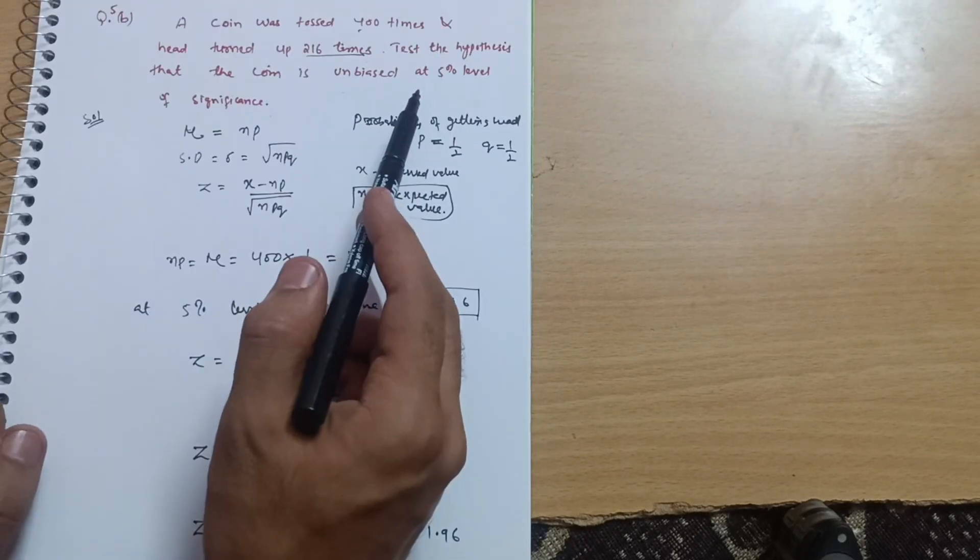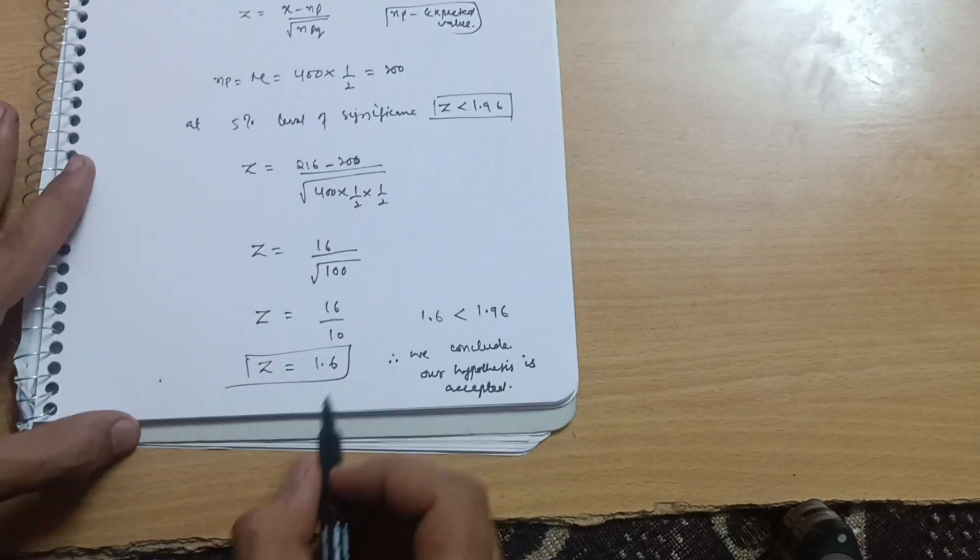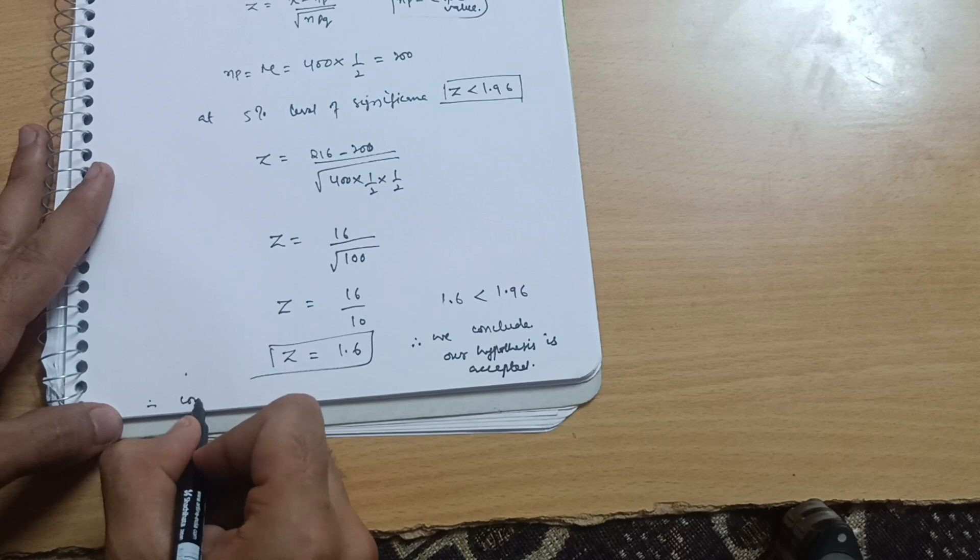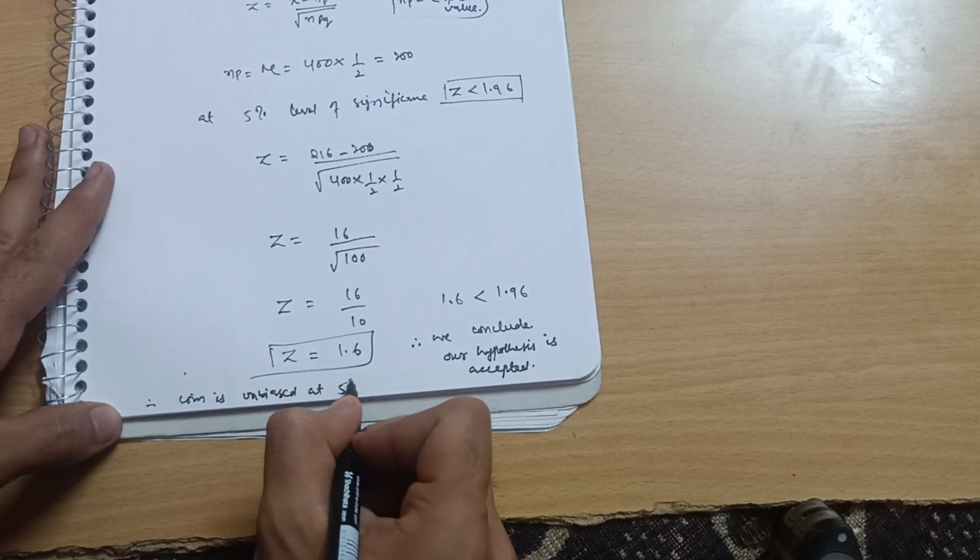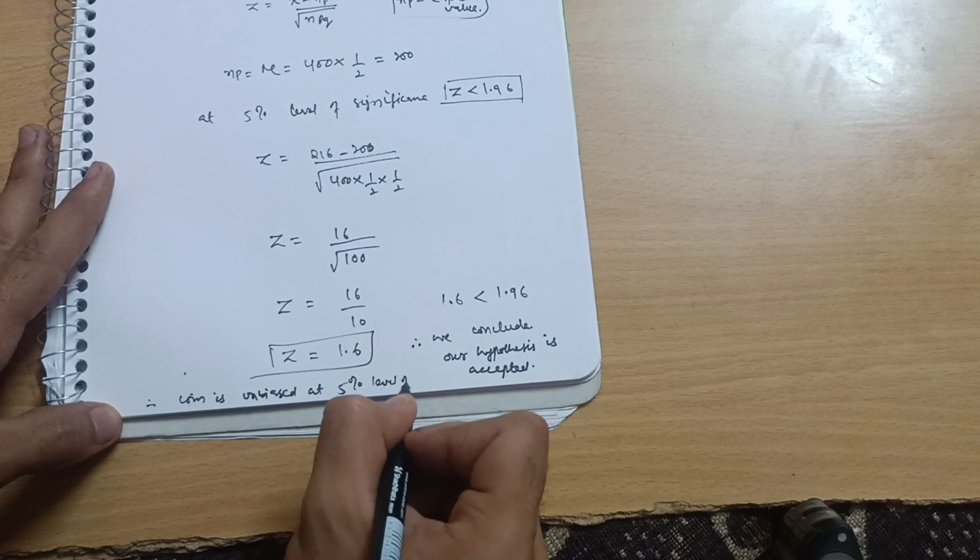Therefore we conclude our hypothesis is accepted and the coin is unbiased at 5% level of significance.